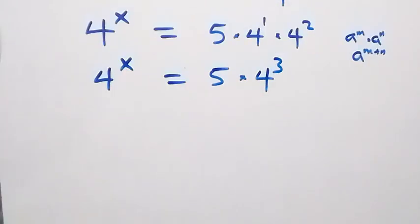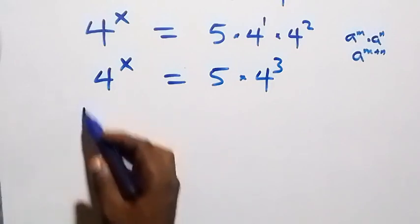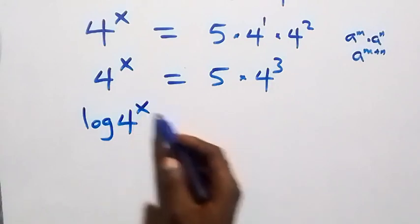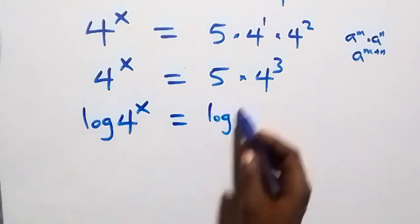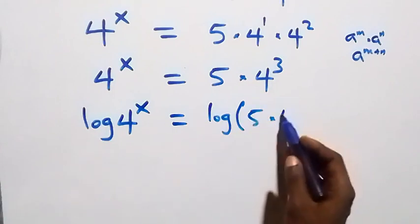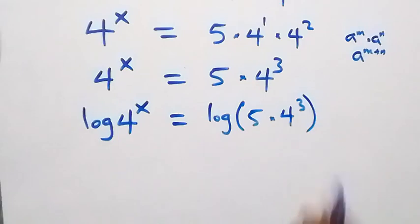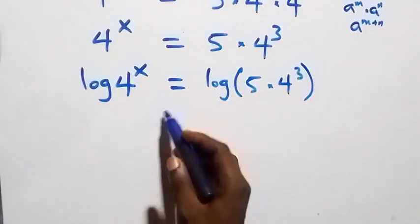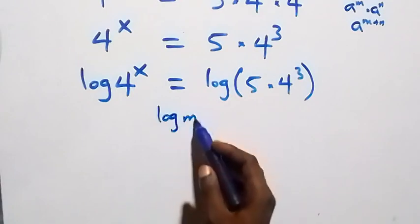The next step is to take the log on both sides. We have log of 4 raised to power x equals log of 5 times 4 raised to power 3. Here we apply the power law of logarithms, where log of m raised to power p equals p times log m.